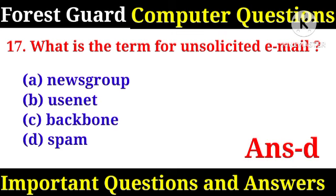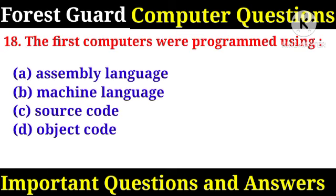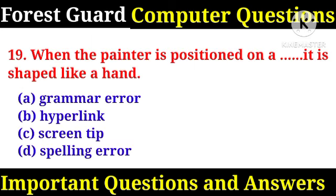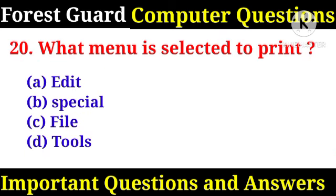What is the term for unsolicited email? Right answer: Spam. The first computer was programmed using? Right answer: B, machine language. When the pointer is positioned on a hyperlink, it's shaped like a hand. Right answer: B.